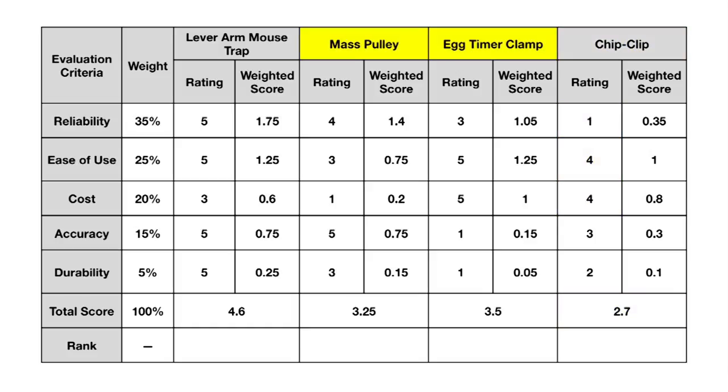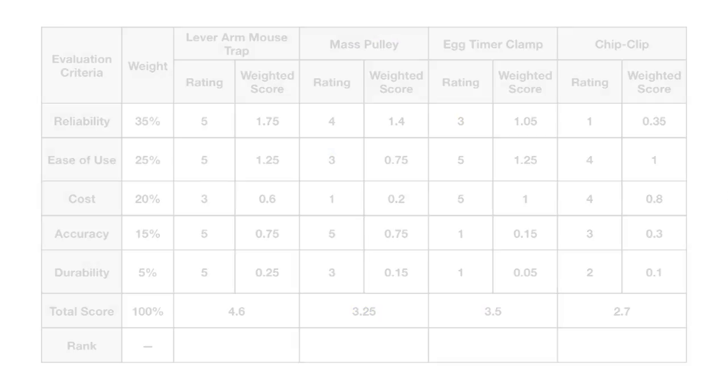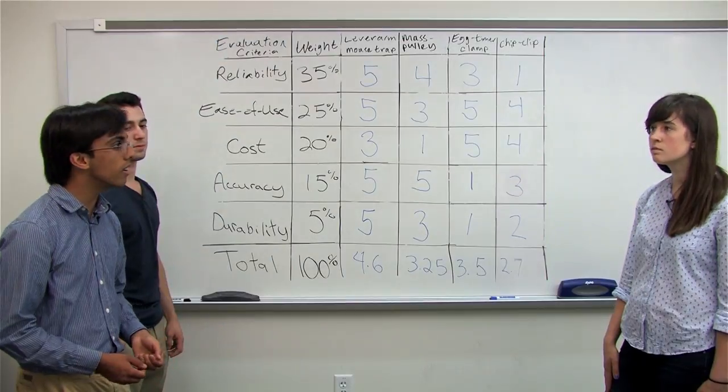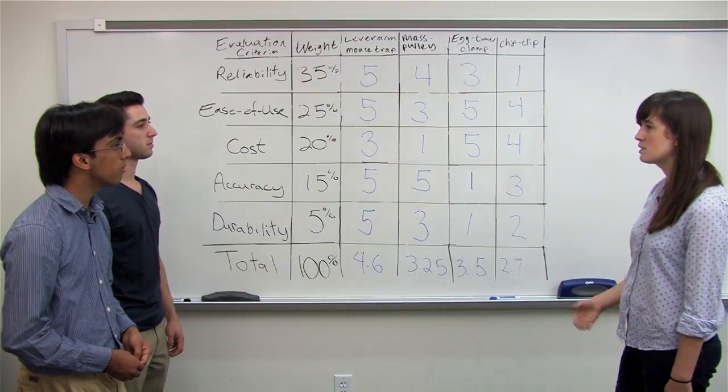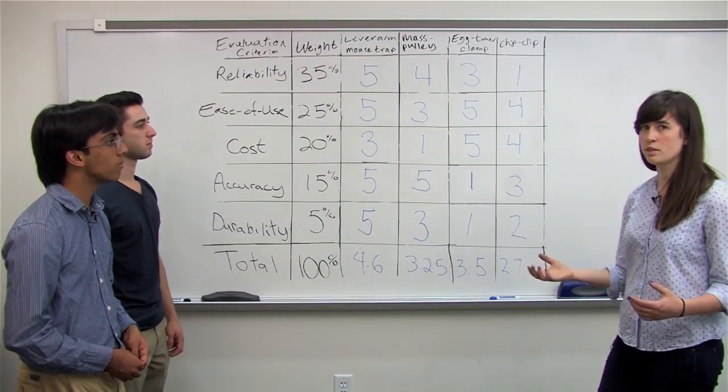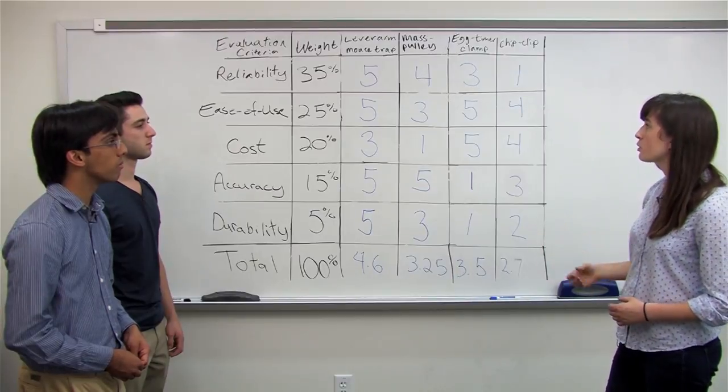In between, we have the mass pulley and the egg timer, which scored similarly at 3.25 and 3.5, because they scored well in some categories, poorly in others, and average in a lot. And so their scores tended toward the middle. And we can see that our overall scores don't have a lot of score compression. And so that means that we had assigned a good number of fives and ones across while we were scoring.